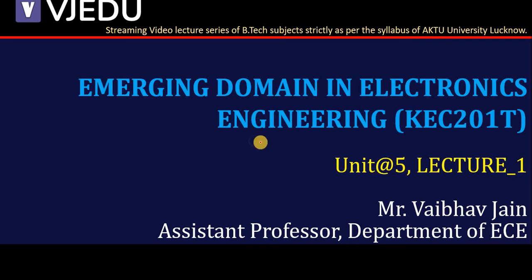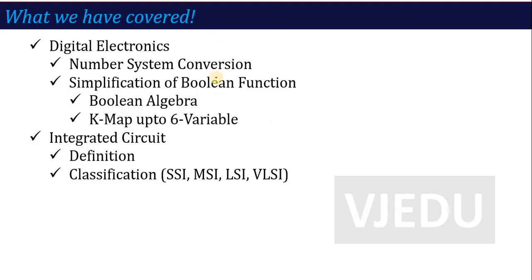In the last lecture we finished unit number 4, where we talked about digital electronics — how the number system converts into another number system. The next main topic we studied was Simplification of Boolean Function: Boolean Algebra and KMAP up to 6 variables, and the use of simplified expressions.